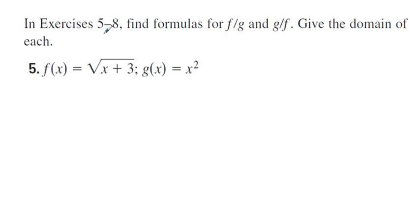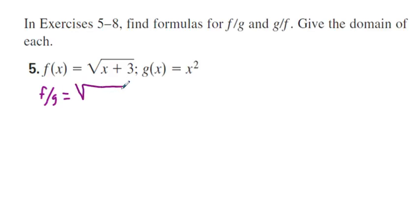In exercises 5 through 8, find the formulas for f divided by g and g divided by f, and give the domain of each. So f over g is equal to square root of quantity x plus 3, all over x squared.